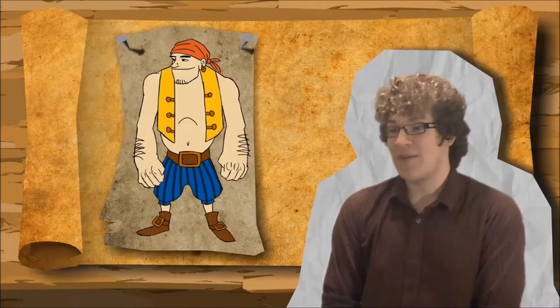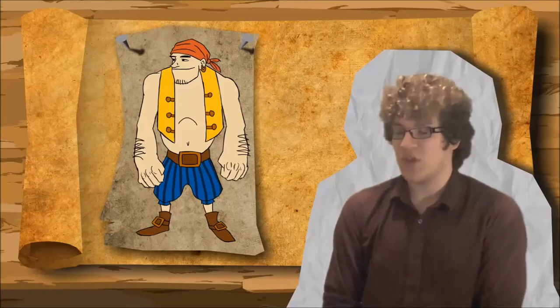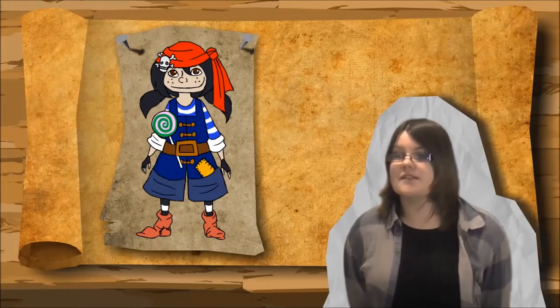The juggernaut is the dim-witted but heavy-fisted muscle of the group. His objective is to destroy key components of the enemy ship. The scoundrel is an agile and greedy thief. Her objective is to find and steal the enemy's treasure.